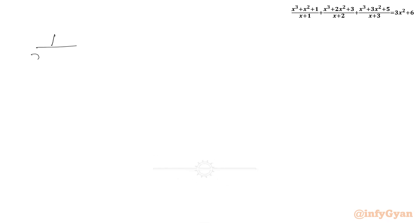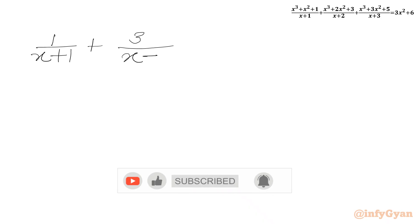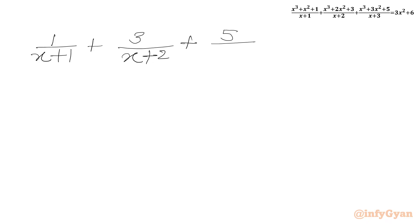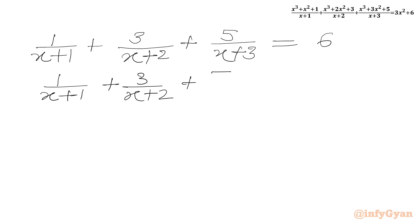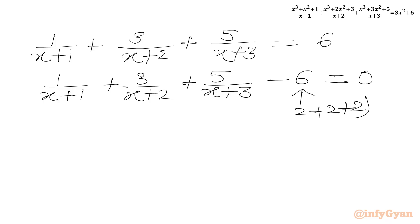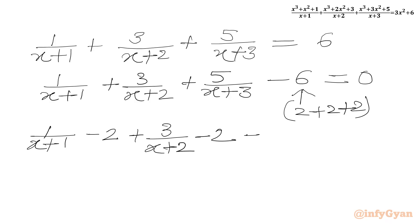So we write 1/(x+1) + 3/(x+2) + 5/(x+3) = 6. Now we take 6 to the LHS: 1/(x+1) + 3/(x+2) + 5/(x+3) − 6 = 0. We split 6 as 2+2+2 and distribute each 2 with each term: [1/(x+1) − 2] + [3/(x+2) − 2] + [5/(x+3) − 2] = 0.